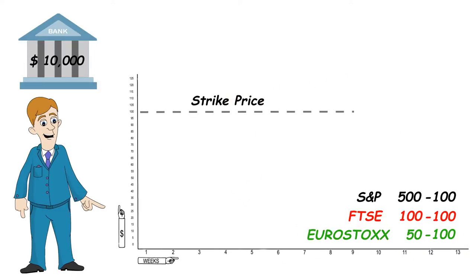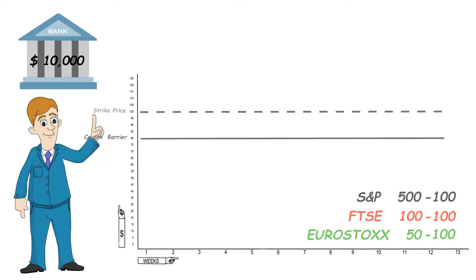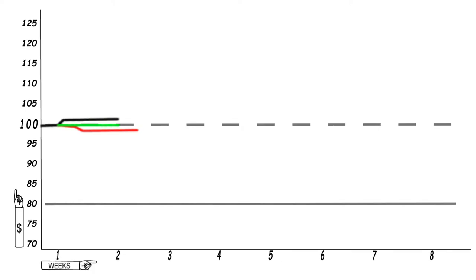The strike price is set for our five-year term and constitutes 100%. We then take 80% of this figure and this becomes the coupon barrier. So for all of our indexes, our coupon barrier is set at 80. Our structured note is now set.